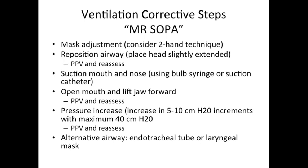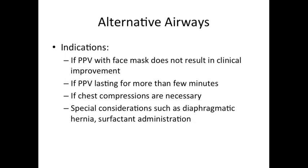If the above steps do not result in an appropriate increase in heart rate, then an alternative airway — such as an endotracheal tube or a laryngeal mask — must be placed. An alternative airway is indicated if PPV with face mask does not result in clinical improvement, if PPV is lasting for more than a few minutes, if chest compressions are necessary, or for special considerations such as diaphragmatic hernia or surfactant administration.